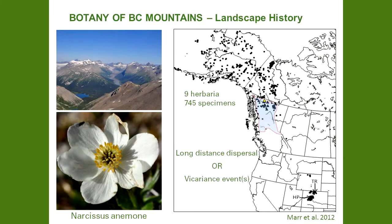Looking for patterns in present-day plant distributions is a starting point to propose hypotheses to understand past migrations. Shown here is a distribution map of Narcissus anemone, a species that we collected this past summer from a mountain near the BC-Yukon border, indicated by the yellow triangle. The position of each dot is based on an actual physical specimen deposited in a publicly accessible collection. The black triangles are our collections from previous years. The dotted red line encloses the general area where we have made collections beginning in 2002. This species grows in open, moist alpine and subalpine meadows, a habitat that is common in the mountains of western North America.